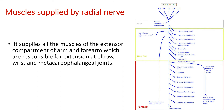Let us briefly consider the muscles supplied by the radial nerve, because these are the muscles that will be affected or paralyzed. The radial nerve supplies all the muscles of the extensor compartment of the arm and forearm. These muscles act as extensors at the elbow joint, wrist joint, and metacarpophalangeal joints, as well as at the interphalangeal joints. However, interphalangeal joint extension is also maintained by the lumbricals and interossei muscles, which are not supplied by the radial nerve, so extension of the interphalangeal joints will not be affected by a radial nerve lesion.